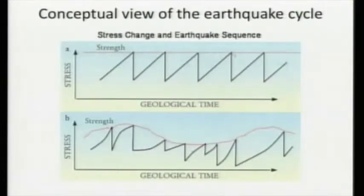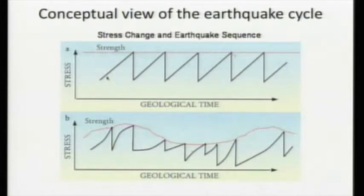I'll begin with a very conceptual view of the earthquake cycle. What's shown on this plot is the shear stress on a fault plotted as a function of time. From loading of the fault, the shear stress increases, and then when it reaches the strength of the fault, it decreases, releasing seismic energy. Unfortunately, the Earth is not this simple — we have both fault strength varying with time, perhaps as pore pressure intrudes a fault, or the normal stresses clamping a fault shut are released. The loading rate can also increase as a function of time.